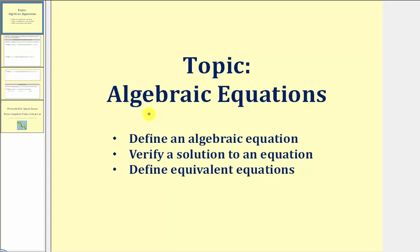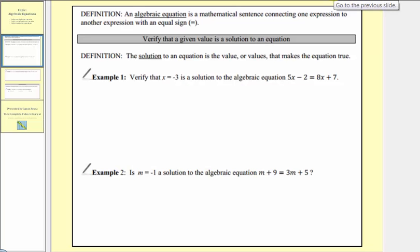Welcome to a lesson on algebraic equations. In this lesson we'll define an algebraic equation, verify a solution to an equation, and also define equivalent equations. An algebraic equation is a mathematical sentence connecting one expression to another expression with an equal sign. So if we don't have an equal sign, we don't have an equation. The solution to an equation is the value or values that make the equation true.